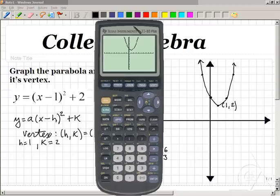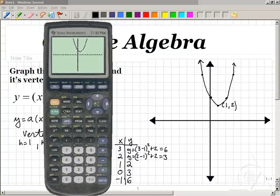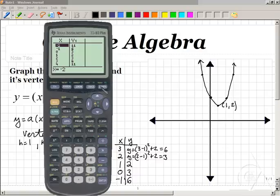Well, we can even double-check the values if we wish by hitting second and then table. And we'll note that when x equals negative 1, 0, 1, or 2, or 3 works out to the same values we've computed here.